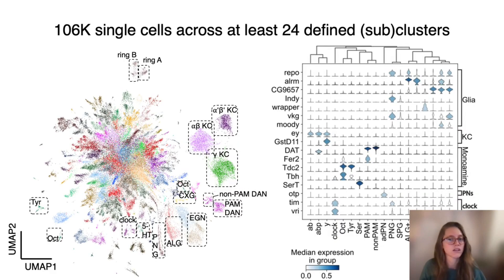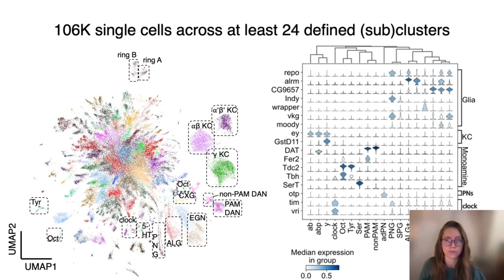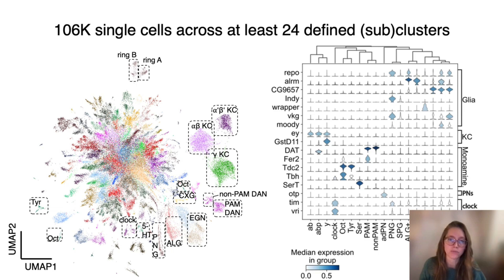The dataset consists of more than 106,000 cells, depicted in this UMAP as single dots. We have identified 24 distinct clusters, with some of the marker genes shown in this violin plot. For example, we can distinguish between the three subtypes of the Kenyon cells: alpha-beta, alpha-beta prime, and gamma, which is the homolog region of the cortex.